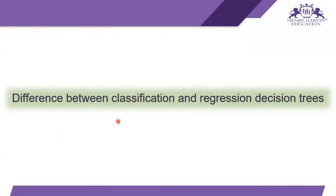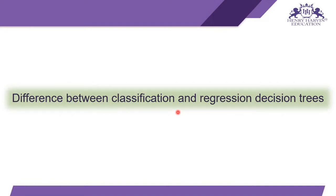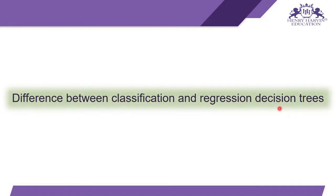Hello everyone. In today's session we are going to talk about the difference between classification and regression decision trees. A decision tree is basically a machine learning algorithm where we make a model, train it on a dataset, and solve classification problems and regression problems using the decision tree algorithm.